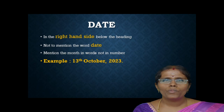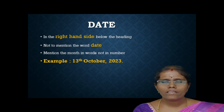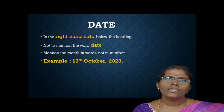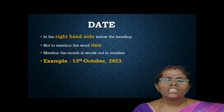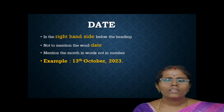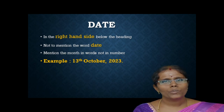Date should be written on the right hand side below the heading. It should not mention the word 'date.' The month should be written in words. Example: 13th October 2023.